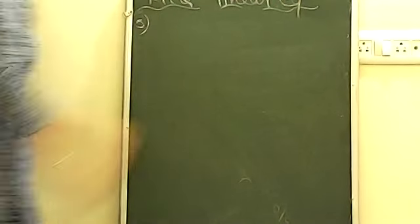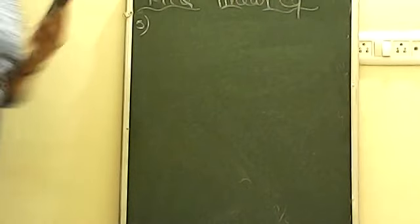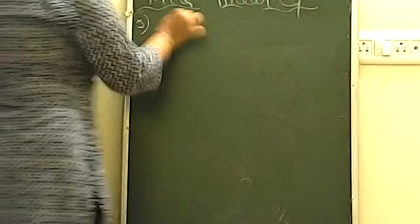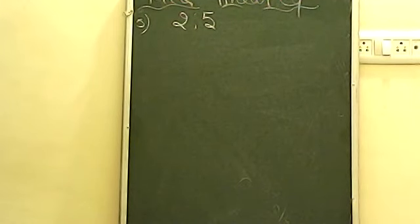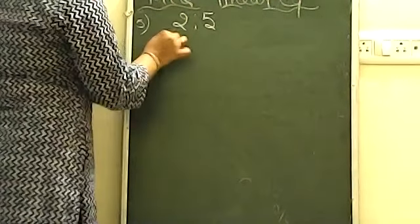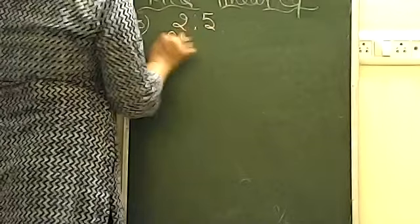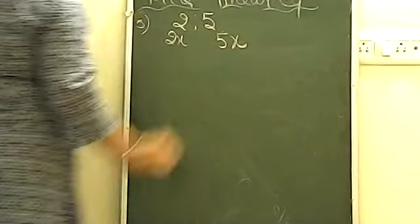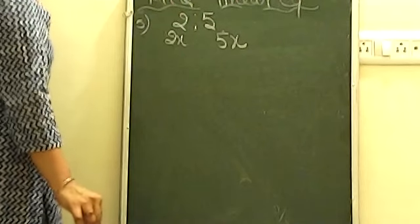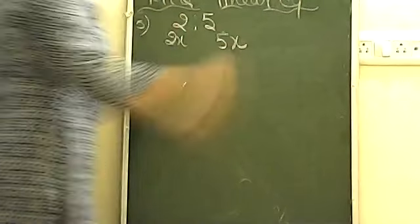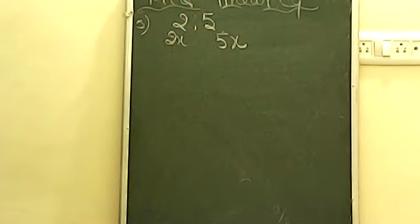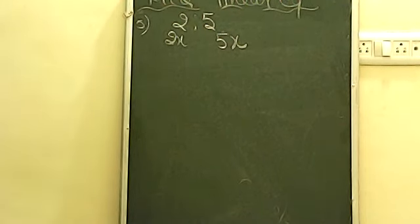Now the fifth MCQ: the ratio of two numbers is 2:5 and their difference is 63. Find the larger number. Let the two numbers be 2x and 5x. Their difference means larger minus smaller. Since 5 is greater than 2, the larger number is 5x and the smaller is 2x.